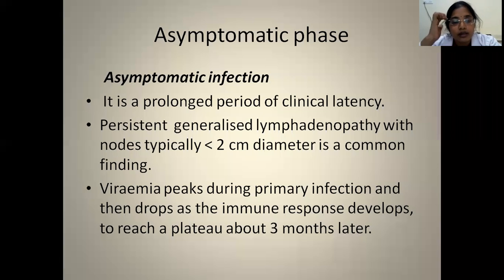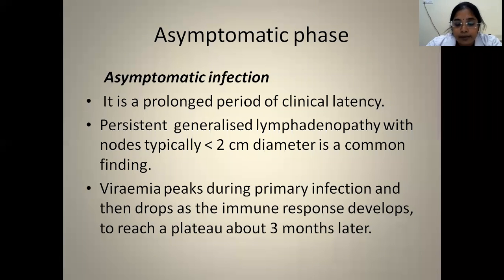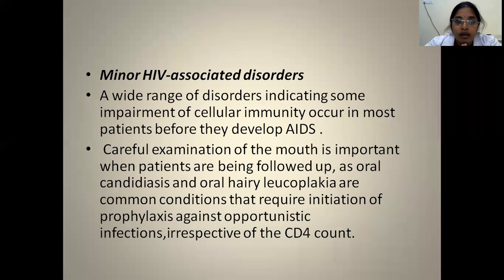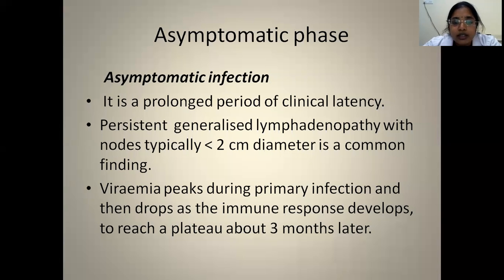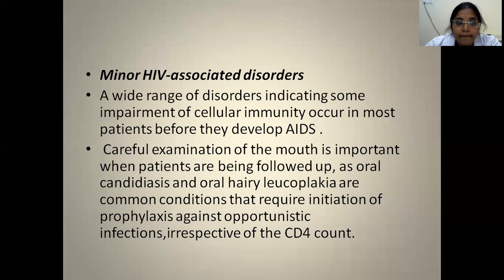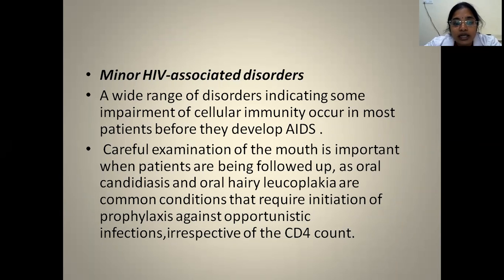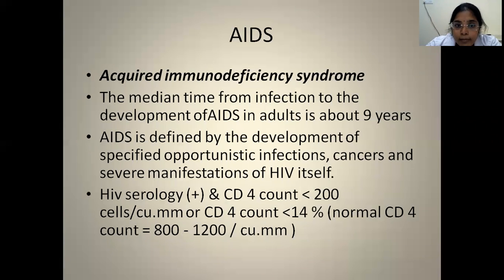Next is the asymptomatic stage, which is a prolonged period of clinical latency. The patient will not show many symptoms but will have persistent generalized lymphadenopathy with nodes typically less than two centimeters in diameter. This asymptomatic phase can last for several years, up to eight to ten years. Before developing full-blown AIDS, patients can have minor HIV-associated disorders due to impairment of cellular immunity, presenting with oral candidiasis, oral hairy leukoplakia, or other minor opportunistic infections. Treatment should be initiated now irrespective of CD4 count.